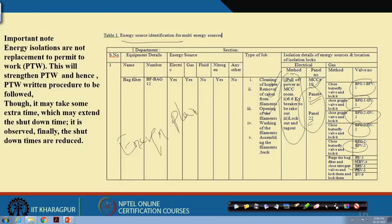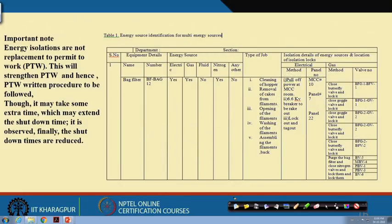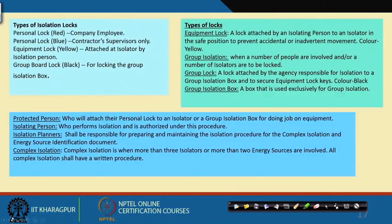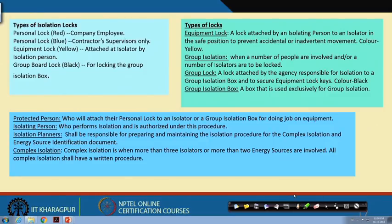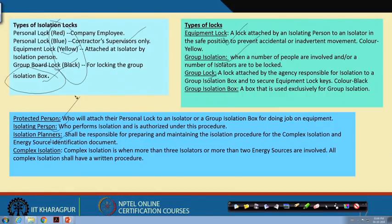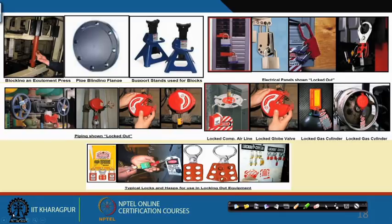The energy planner is a very important person and a lot of training is given to them on how to do this. The types of locks used are: personal lock by employees, personal lock by contractor supervisors, equipment locks, group board locks, and the isolation box. These are the four types of locks and the isolation box that people use.